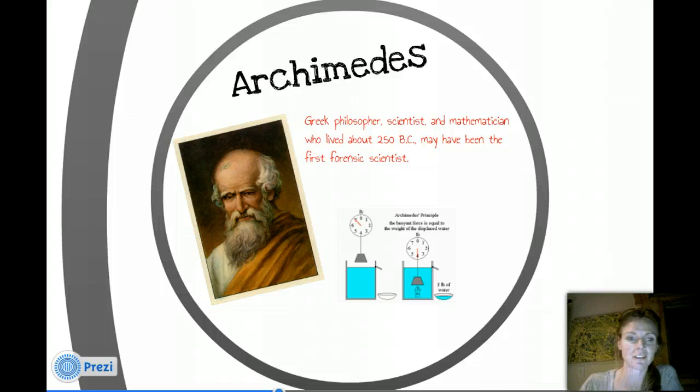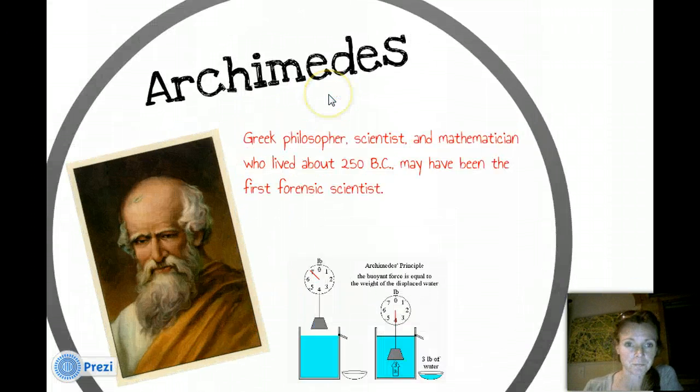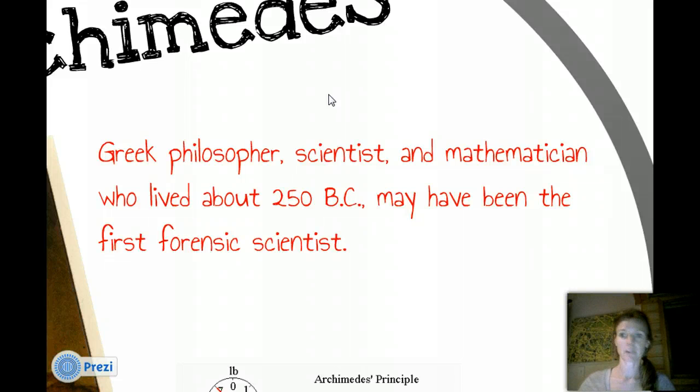But here are some important features of where forensic science came from. So, there's this crazy-looking dude, Archimedes. Don't you wish that... I feel like when I look back at those pictures, they all look kind of crazy, goofy, weird eyes, long beard. Nonetheless, whatever. He was a Greek philosopher, scientist, and mathematician. Hey, can't we all say that about ourselves? No, just kidding. Pretty amazing guy. So, it's interesting, Archimedes actually is known for many different things. I'll tell you about his principle in just a second.